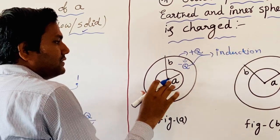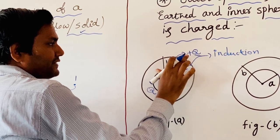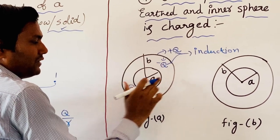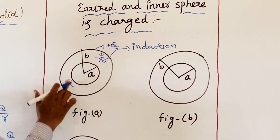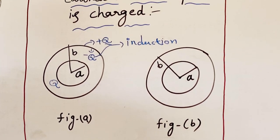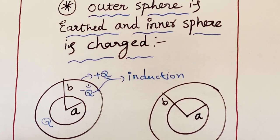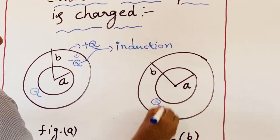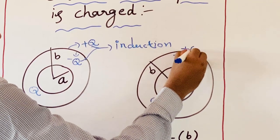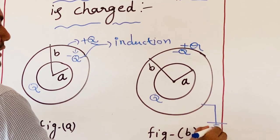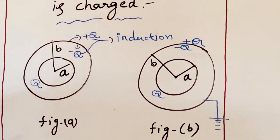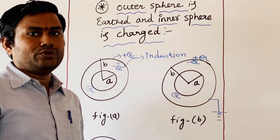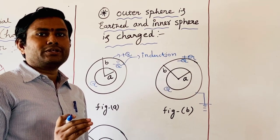Remember, these are induced charges. That is why the total charge Q minus Q is neutral — we are not giving any charge to the outer sphere; we are giving charge Q only to the inner sphere. In the latter part, we need to earth the outer sphere. Earthing is the phenomenon in which the potential of the conductor becomes zero. Earth potential can be treated as zero.